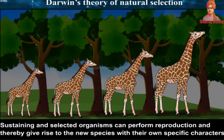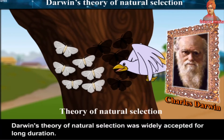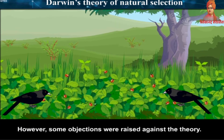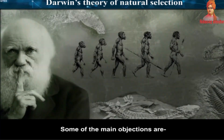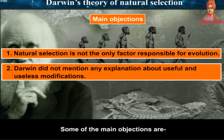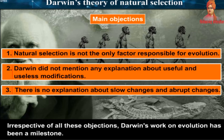Sustaining and selected organisms can perform reproduction and thereby give rise to new species with their own specific characters. Darwin's theory of natural selection was widely accepted for a long duration. However, some objections were raised: natural selection is not the only factor responsible for evolution; Darwin did not mention any explanation about useful and useless modifications; and there is no explanation about slow changes versus abrupt changes. Irrespective of all these objections, Darwin's work on evolution has been a milestone.